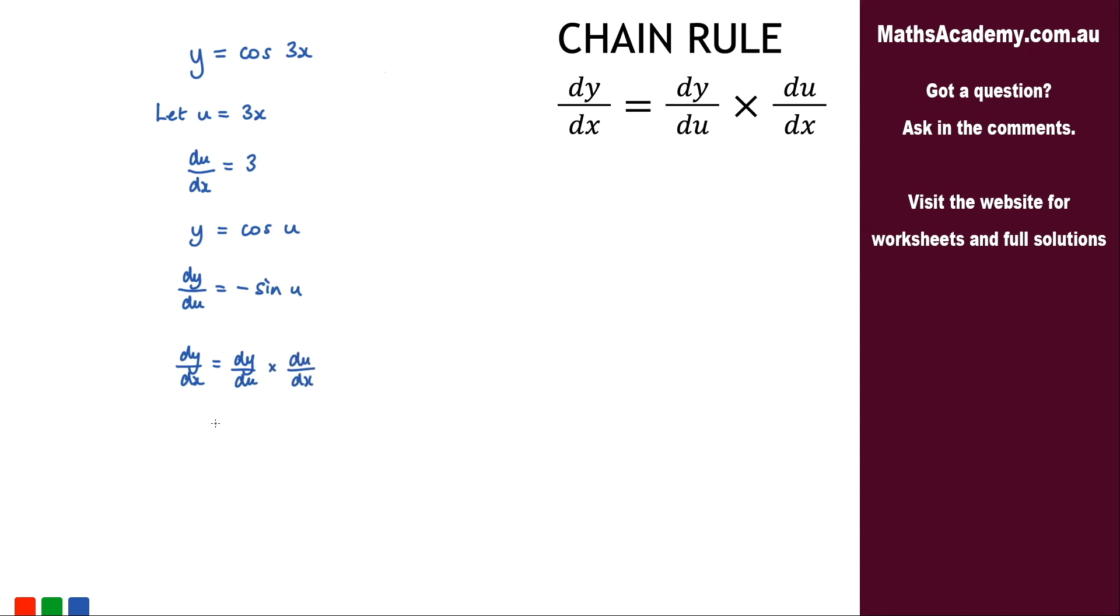Well we know what dy by du is. dy by du is negative sine of u and we're going to multiply that by du by dx which is 3.